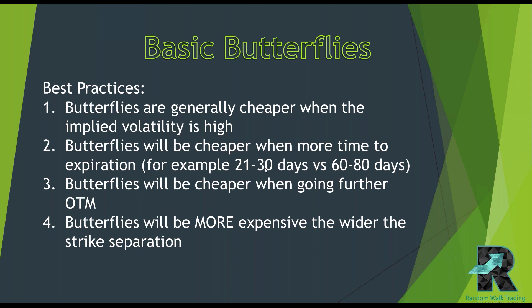Butterflies can also be cheaper when you allow more time to expiration. I generally like between 21 and 30 days. Options decay the most once they hit the 30-day level — some say 45 days — where theta starts to really come out of the options. For iron condors, 45 days is pretty much the upper window. Under 30 days theta really starts picking up, which is what we want — we want theta accelerating and the underlying to be underneath the tent inside the butterfly.